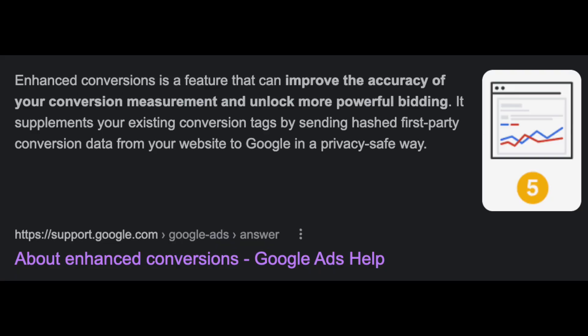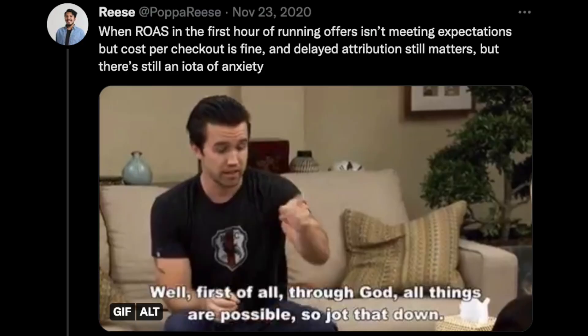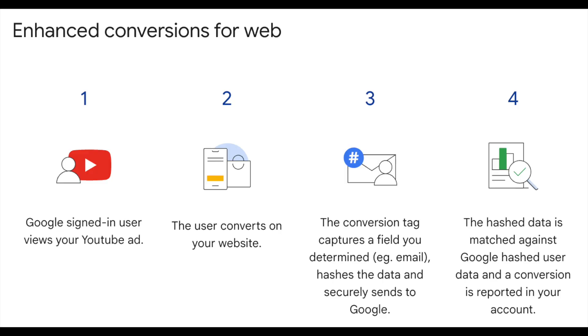Enhanced conversions is a feature from Google that lets you track up to 4% more conversions associated with your Google Ads campaigns. In some cases, that 4% could mean the difference between success and failure for how your campaigns are evaluated. Google does that by sending hashed customer data to their servers whenever someone converts on your website. In this video, we're going to look at how to set up enhanced conversions for your Shopify store.